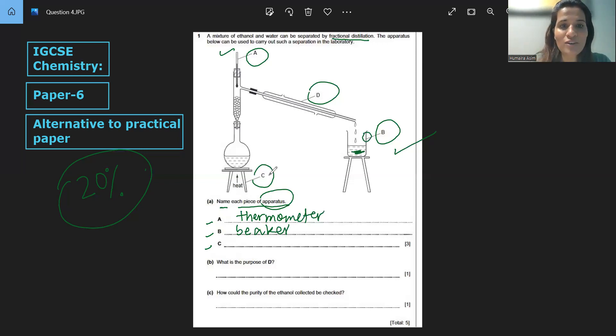And C is what here? As we can see, this is tripod stand. Then next, what is the purpose of D? First of all, let's name it for ourselves. What is that? That is Liebig condenser.